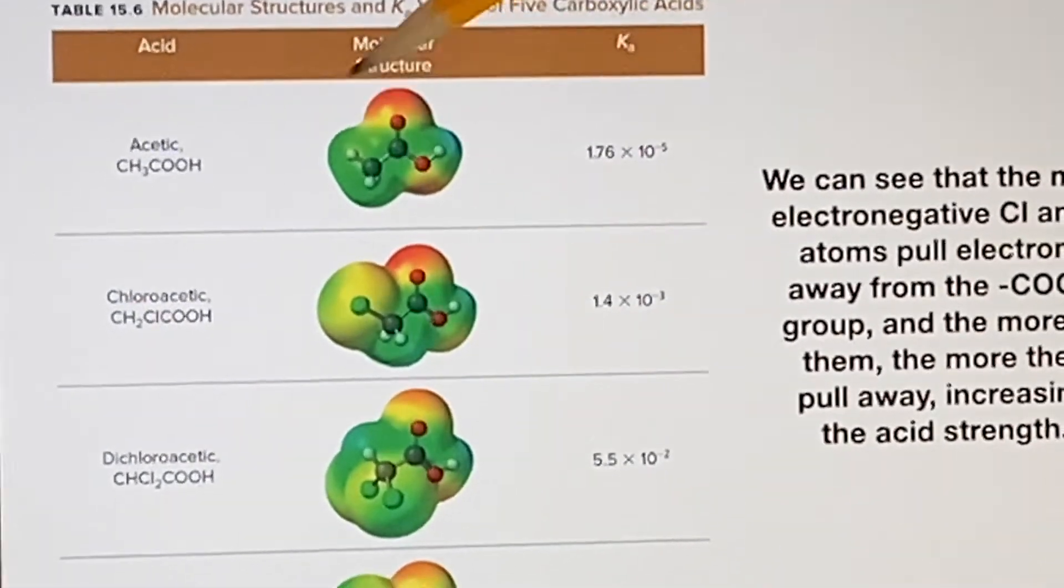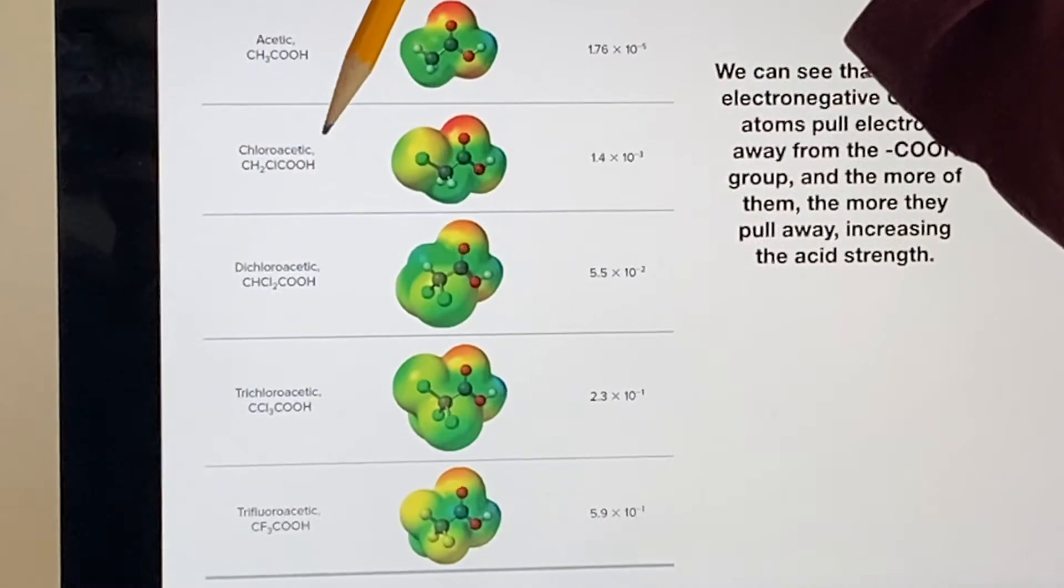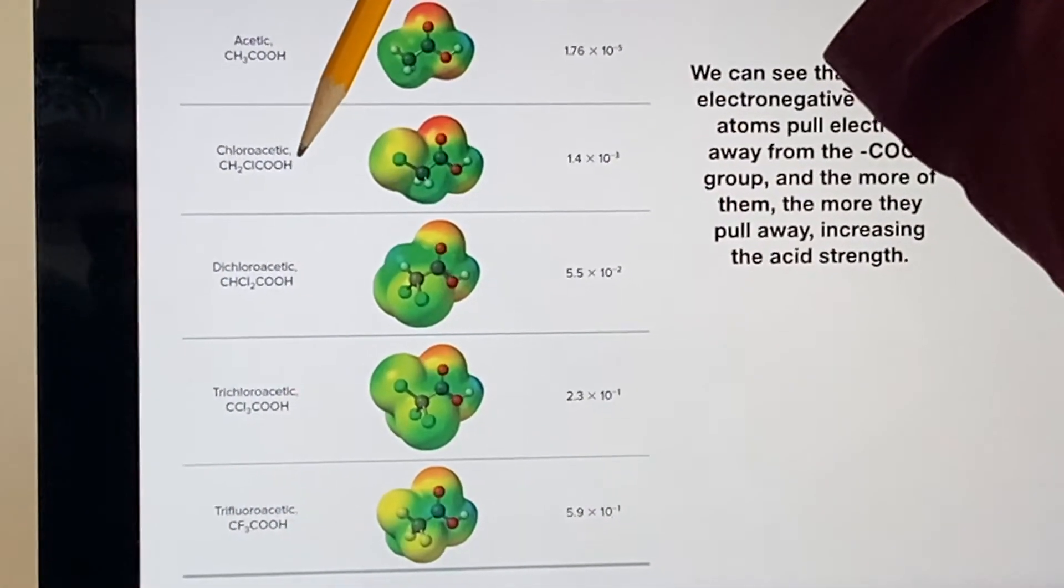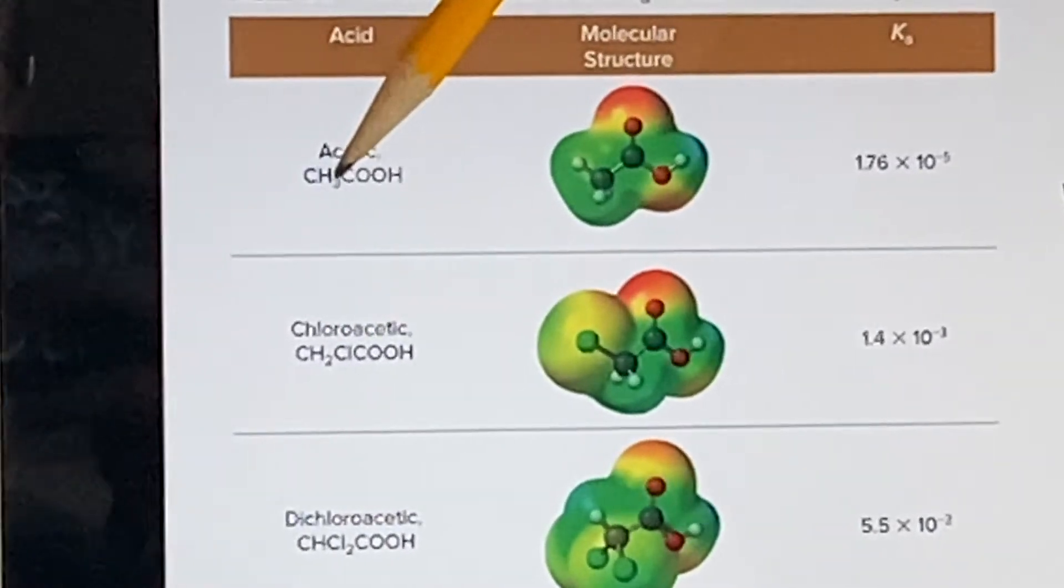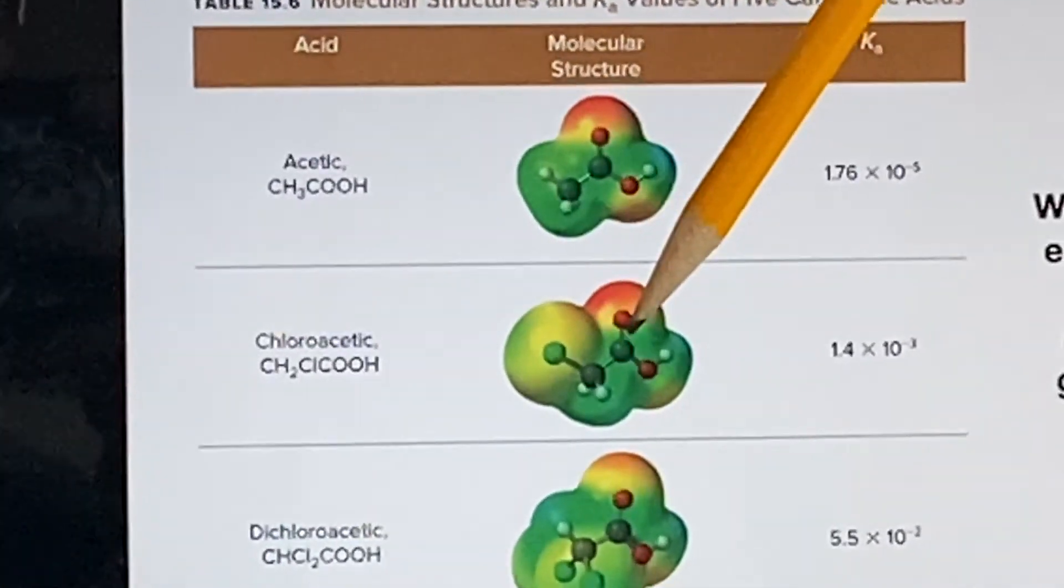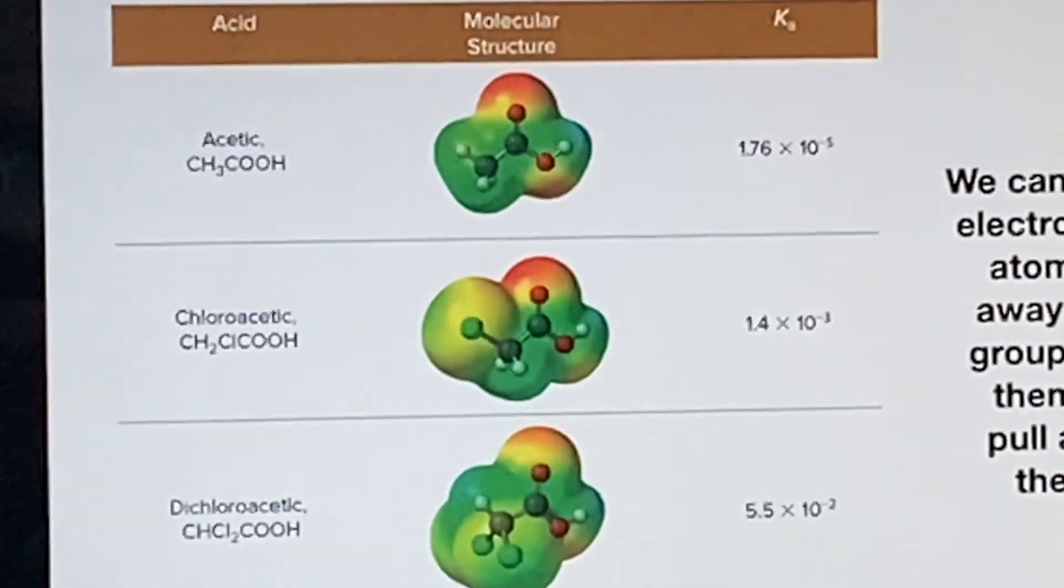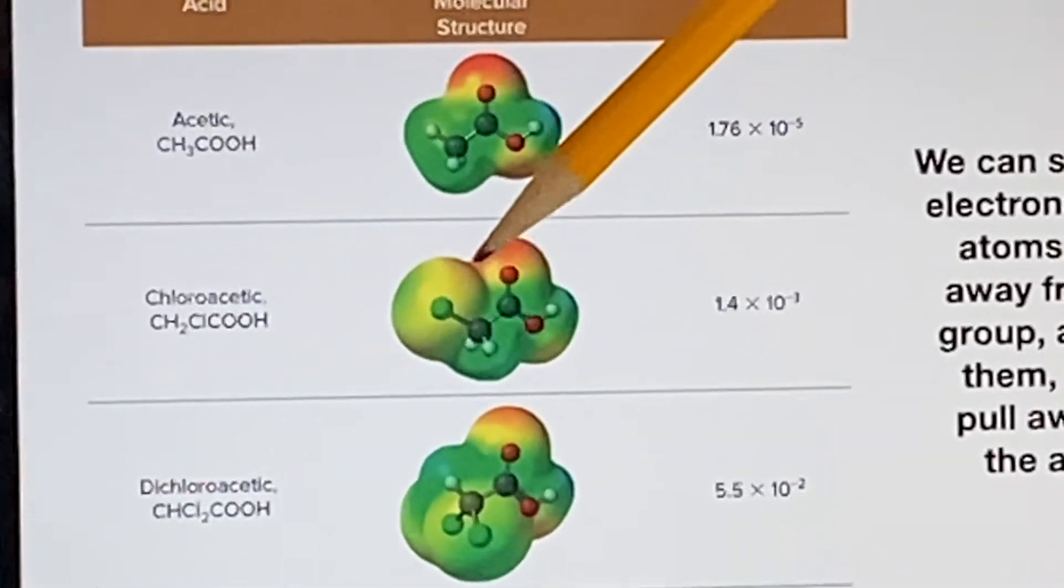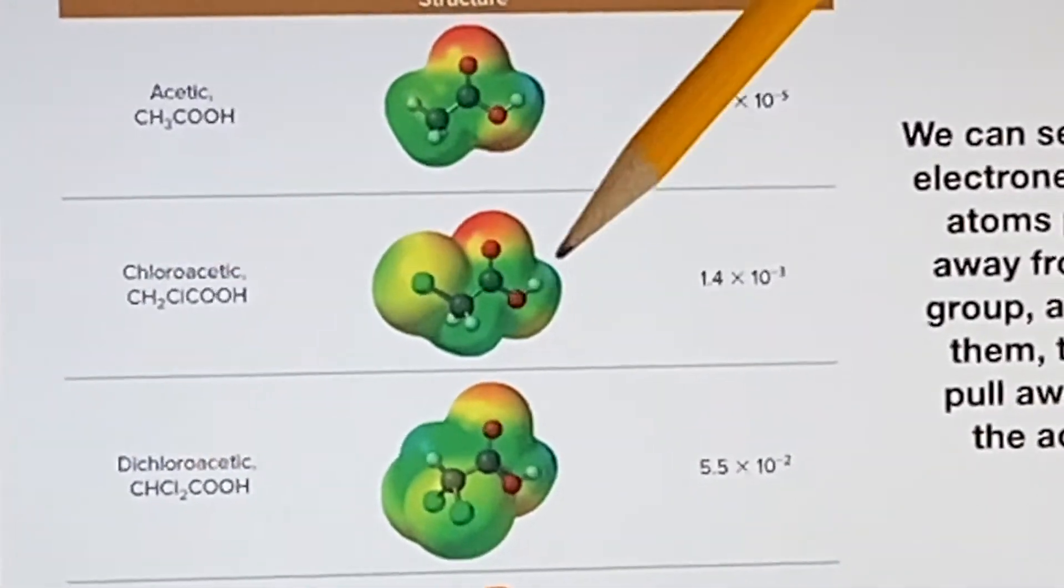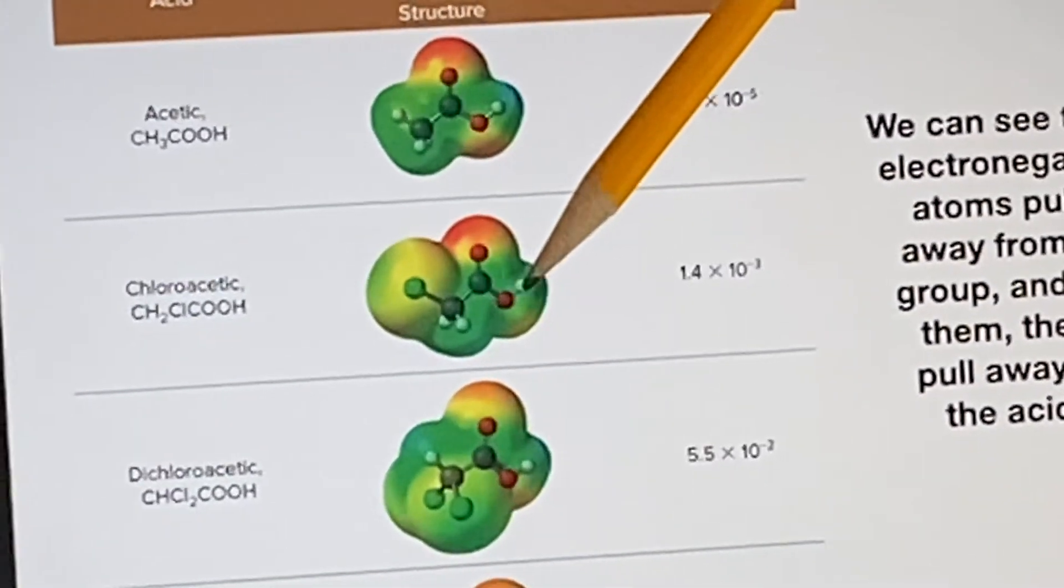All right, using that coloring. Now if you come down here to chloroacetic acid, you will see the big difference is that we have replaced one of these hydrogens with a chlorine. There it is, there's the chlorine. Now chlorine is quite electronegative, not as electronegative as the oxygen—you see it doesn't go to red, it goes to just yellow—but it is pulling more electron density away from the end where there's this hydrogen attached to the oxygen, so it becomes a stronger acid.